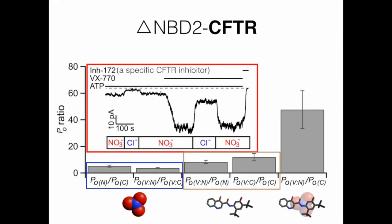Shown here is the macroscopic current of ΔNBD2 CFTR in either chloride or nitrate, and treated either with or without VX-770 as labeled. It turns out that the fold increase of PO by nitrate is nearly the same whether VX-770 is present or not. By the same token, the presence of nitrate does not affect the fold increase of PO by VX-770.